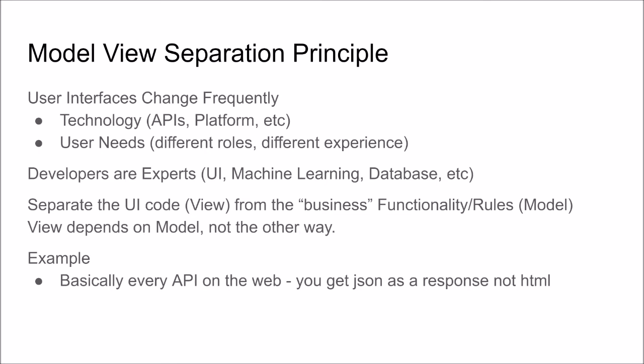As an example, you can just take a look at basically every API you can find on the web. You get JSON as a response from the service requests you make, and not HTML. If you got HTML back, then you would probably need to parse the HTML and remove all the user interface stuff before you can do your own user interface. Basically, this is an example of model view separation.